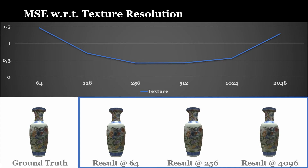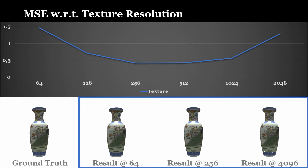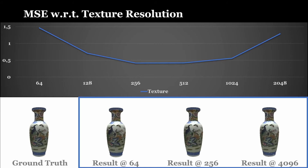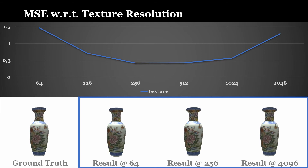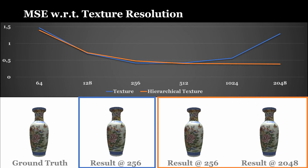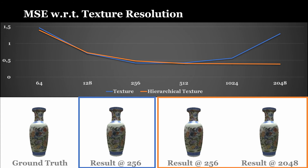The rendering quality is dependent on the resolution of the texture. A texture at a single resolution might be too coarse or too fine, which leads to overfitting and undersampling during training. Because of this, we use a hierarchy of textures, resulting in better sampling behavior, particularly for higher texture resolutions.